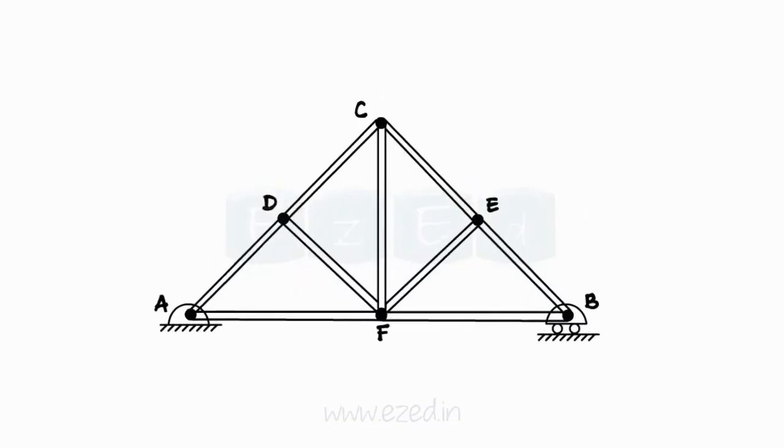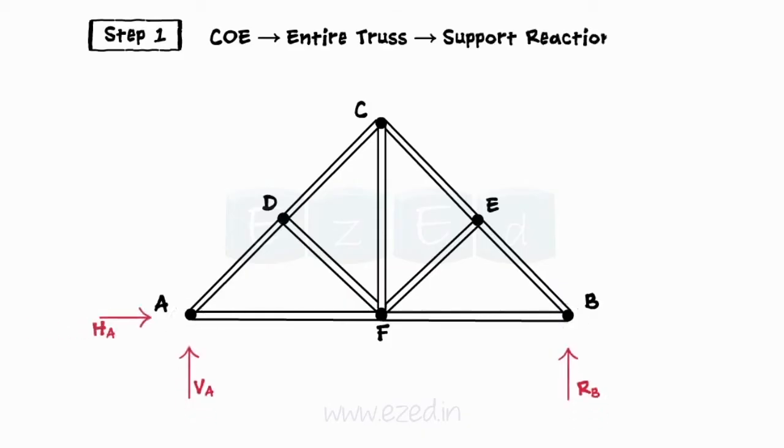The following steps are followed while analyzing a truss using method of joints. Step 1: We will first apply conditions of equilibrium to the entire truss to calculate reactions at all the supports.